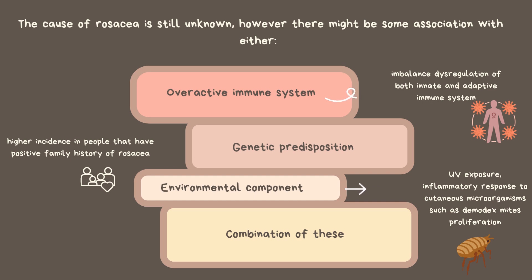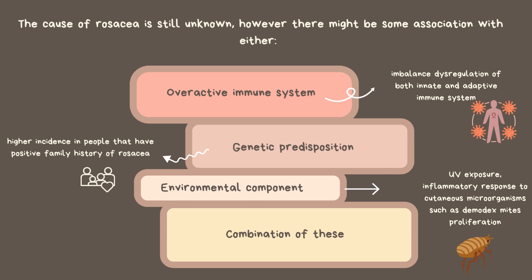Number two, genetic predispositions. This can be seen in the higher incidence in people who have a positive family history of rosacea. Number three, environmental components, which include UV exposure and inflammatory response to cutaneous microorganisms, such as demodex mite proliferation.